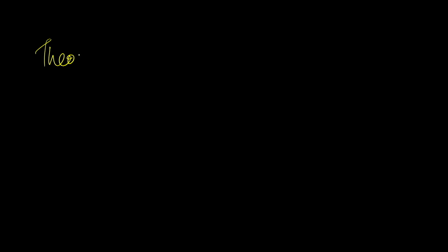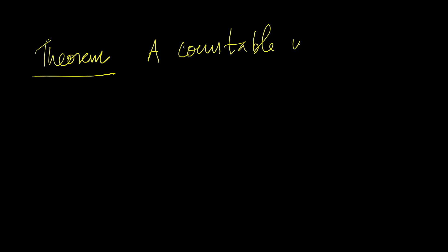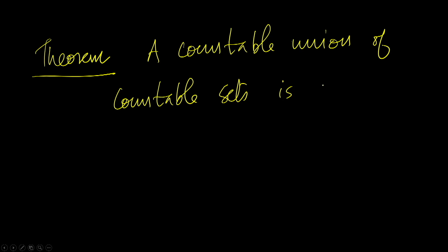A famous theorem of set theory called the Schroeder-Bernstein theorem says that if B dominates A and A dominates B, then A and B are equinumerous. In other words, if the cardinality of A is less than or equal to the cardinality of B and the cardinality of B is less than or equal to the cardinality of A, then the two have identical cardinalities. A related theorem asserts that a countable union of countable sets is countable.